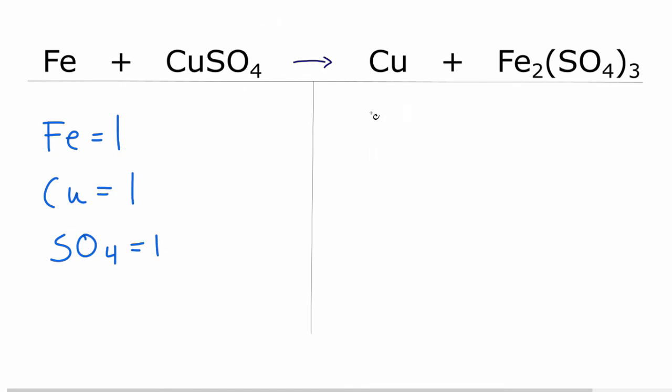On the product side, Fe, I have two of those. I have one copper. And then the SO4s, the sulfate, I have three of those. So the equation's not balanced.